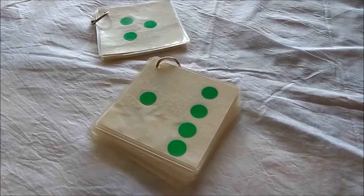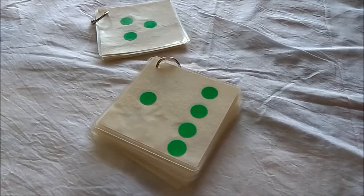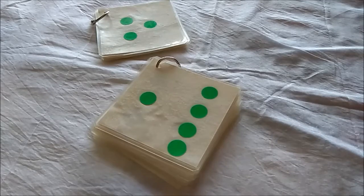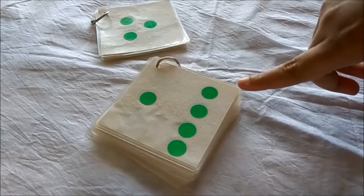Subitizing, if you don't know, means identifying numbers in groups or chunks. It is the ability to see a small amount of objects and know how many there are without actually counting the objects.